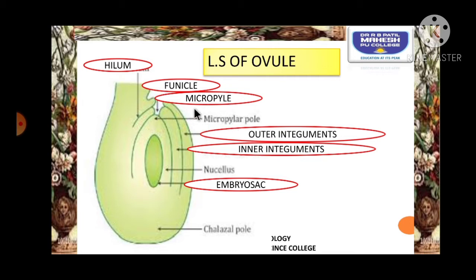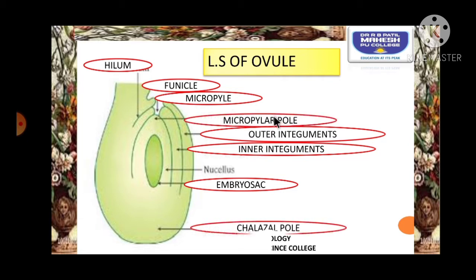The ovule becomes differentiated into two regions. The region near the micropyle is called the micropylar pole, whereas the region opposite to the micropyle is called the chalazal pole. Next to the embryo sac, this portion is made up of a mass of undifferentiated cells that are diploid and rich with reserve food.